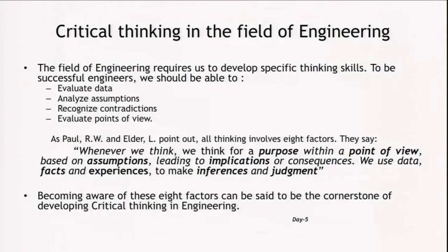Critical thinking in the field of engineering involves the following: evaluating data, recognizing contradictions, analyzing assumptions, and evaluating different points of view. Evaluating data involves judging and weighing facts to see what would be right or wrong. Analyzing assumptions means analyzing concepts like the concept of building a dam, the concept of making a cooling system, or the concept of making biodegradable plates with which one can eat. How do you analyze, weigh, and judge such assumptions? Sometimes in the assumptions we make, we might even find contradictions.